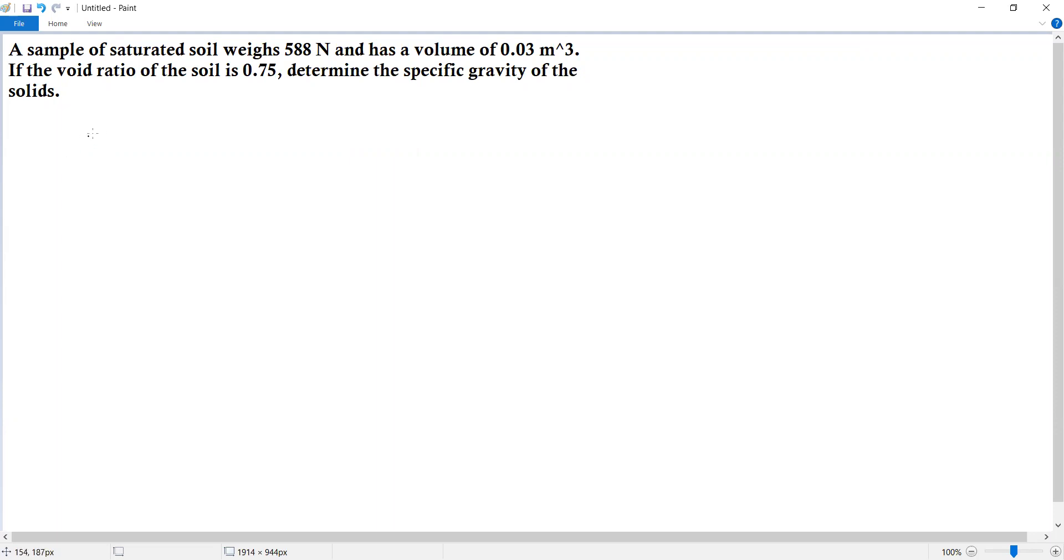Given: the soil weight is 588 Newtons, volume is 0.03 cubic meters, and void ratio is 0.75. The sample is saturated, which means the degree of saturation is equal to 1. We need to determine the specific gravity of the solids. So, Gs is what we're looking for.